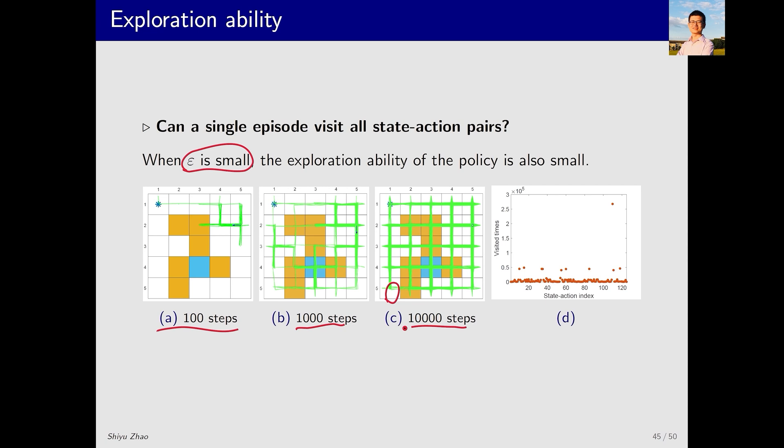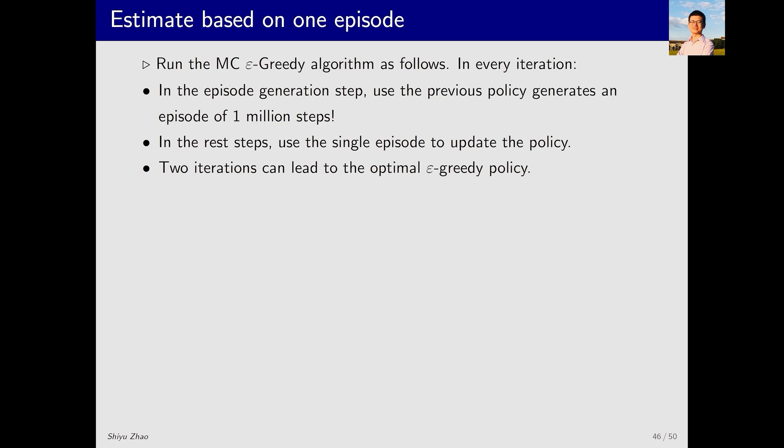Even if the episode has one million steps, we notice that the frequency of visits is highly uneven. That is, some state actions are visited an extremely high number of times, while others are visited less frequently. But compared to a greedy policy, it still possesses a certain exploratory ability. Through the two examples just discussed, we see that the epsilon greedy policy indeed has a certain level of exploratory ability.